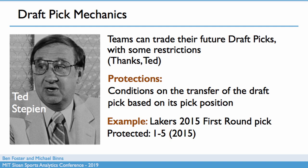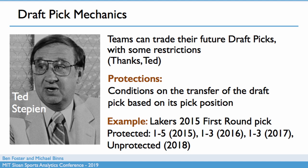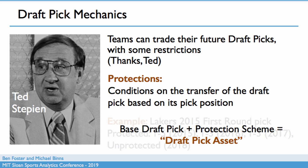This is the Lakers 2015 first-round pick. It was initially traded to the Suns for Steve Nash in 2012. It was then traded from the Suns to the Sixers in 2015 at the trade deadline. That pick was protected top five in 2015, which means if the Lakers were to end up with the first, second, third, fourth, or fifth pick, they would get to keep it. The Sixers would not get the pick that year — it would roll over to the next years, where it was top three protected for a couple years, and then unprotected in 2018. We call this combination — the base draft pick plus its protection scheme — a draft pick asset. This is the thing we're interested in analyzing.